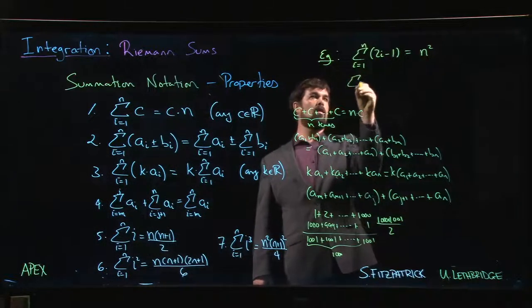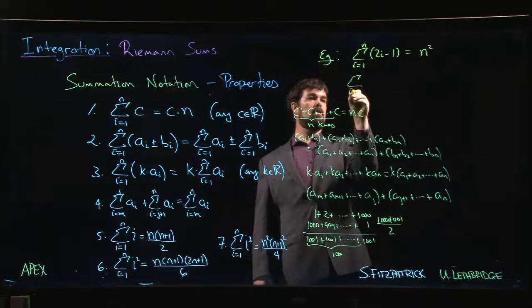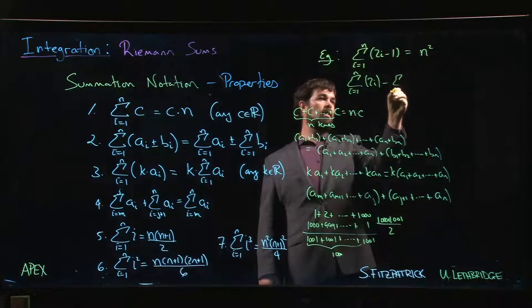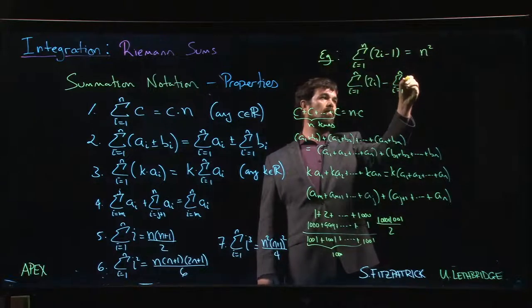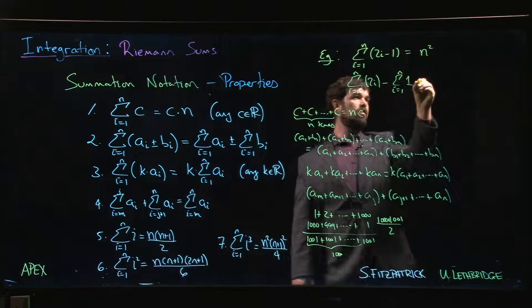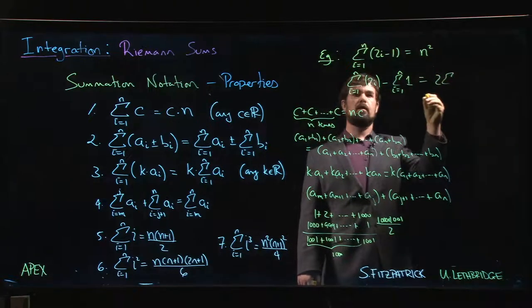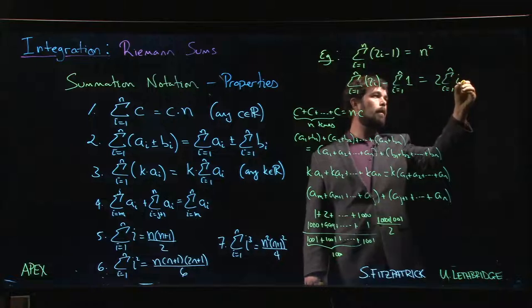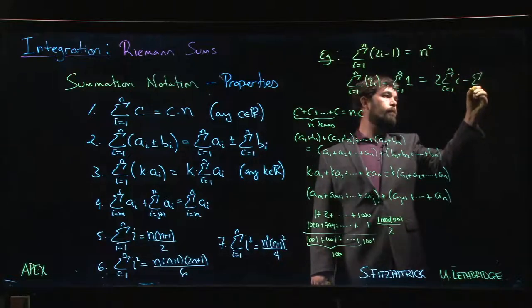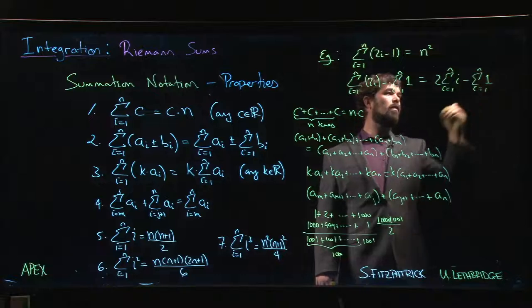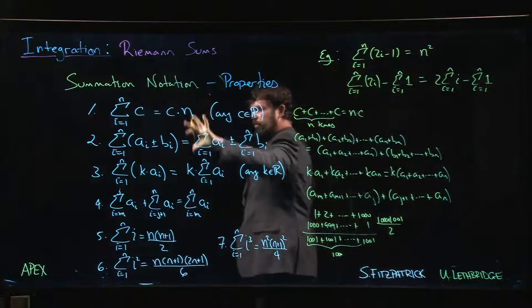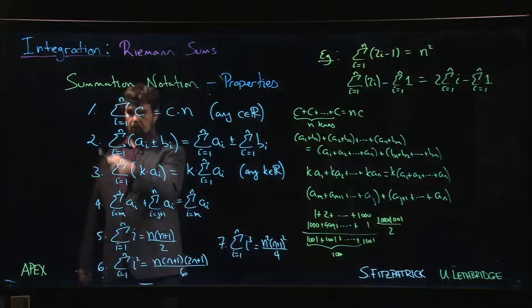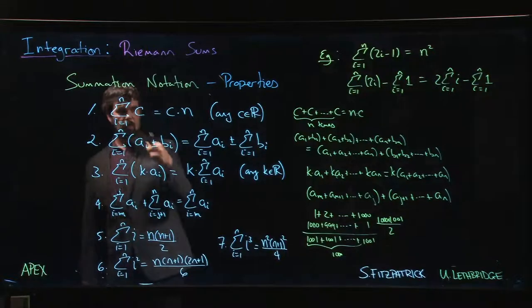What I can do is I can say, well, this sum on the right is the sum of 2i minus the sum of one. I can factor out the two here. So far I'm using these algebraic properties here.